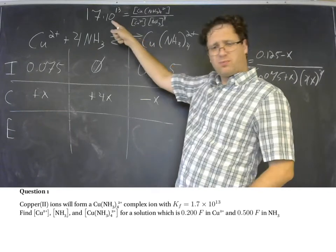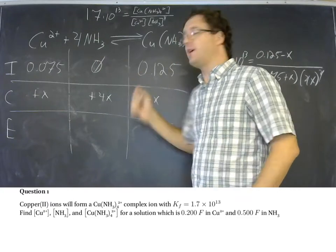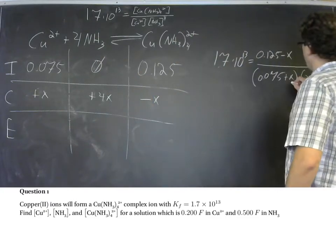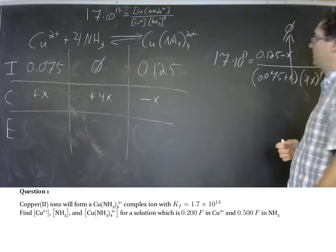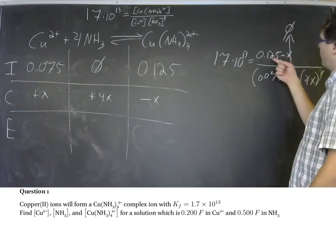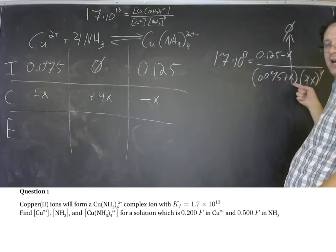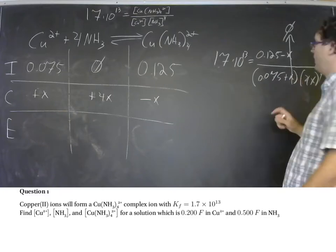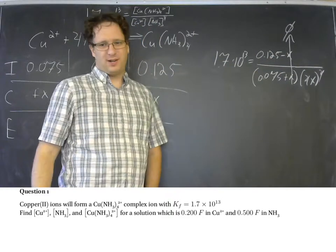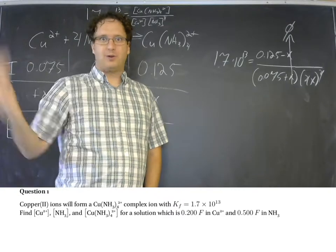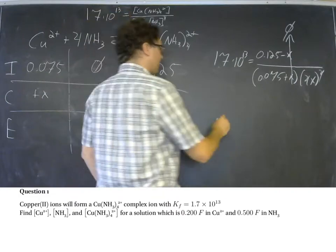And now our equilibrium expression is 1.7 times 10 to the 13th equals 0.125 minus x over 0.075 plus x and 4x raised to the fourth power. Now we can assume that x is going to be small. It's product favored. We've got it on the product side. So it'll go backward just a tiny amount. And if x is small then both of those can be assumed to be equal to 0.